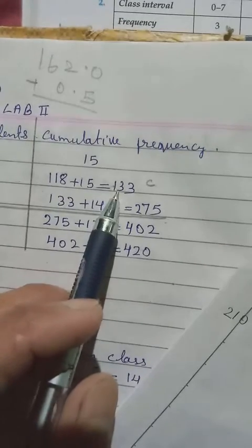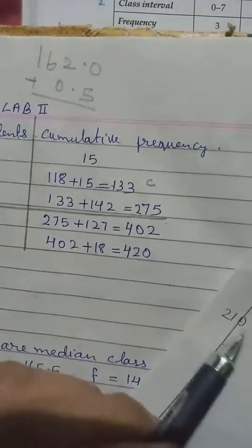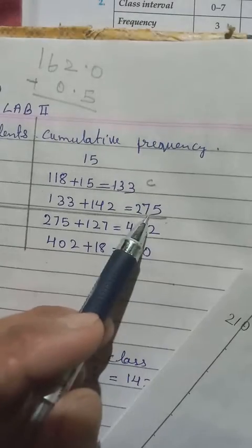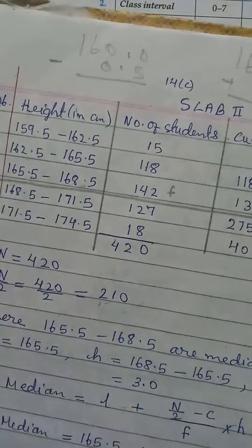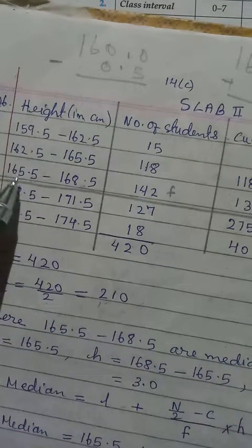So this one is less than 210. This one is greater. So that mean this one will be the median class. So if you take this as the median class, then this one will be the lower limit.